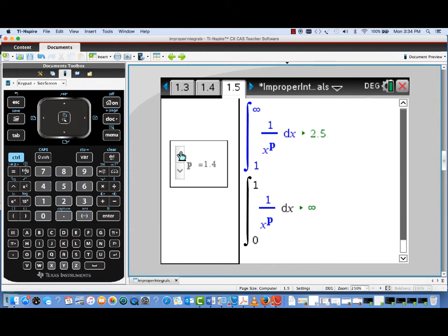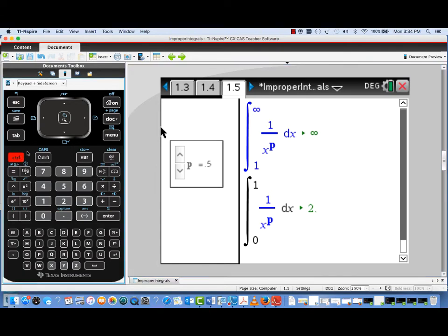Now, I'm going to change that power down to a value that's less than 1. Again, for p equal to 1, both of them diverge. If we have a power of p less than 1, notice that the behavior switches. Our Type 1 improper integral diverges, but our Type 2 now converges.